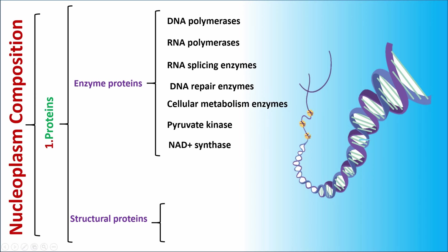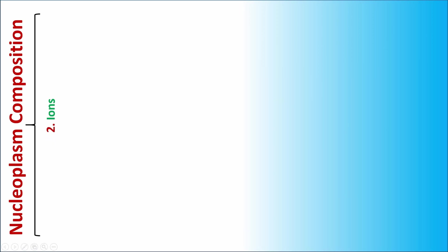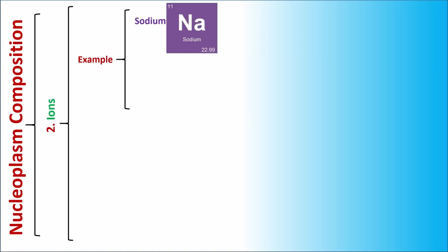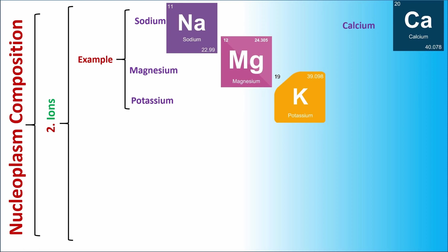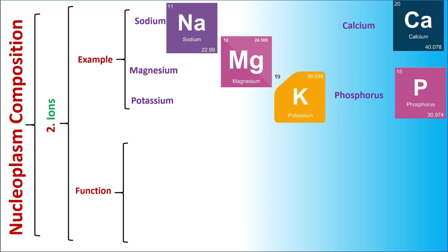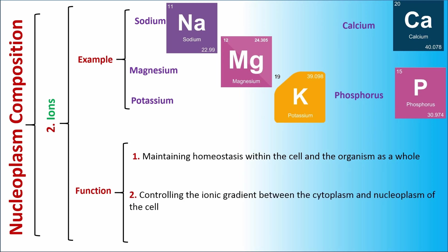Structural proteins can be divided into two subgroups: histone proteins and non-histone proteins. The second part of nucleoplasm composition is ions. Some examples of ions are sodium, magnesium, potassium, calcium, and phosphorus. The functions of ions in the nucleoplasm include maintaining homeostasis within the cell and the organism as a whole, controlling the ionic gradient between the cytoplasm and nucleoplasm, and maintaining the osmolarity of the nucleoplasm.